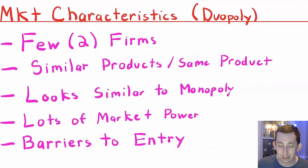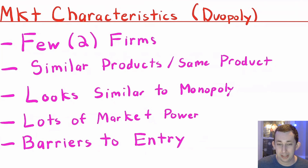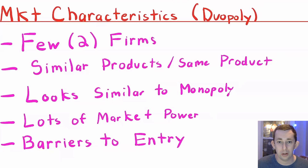There are lots of barriers to entry. They're not impossible to overcome — it is possible to enter this market — but it's really, really hard. An example of an oligopoly or a duopoly is the aviation or plane market. You have Boeing and Airbus, which are the two major players. You might say you have a third player like Gulfstream or Mitsubishi who make planes, but there are very few firms who make airplanes. It's an oligopoly market, and each of those firms has a ton of market power, even though neither of them is a monopoly in the market.